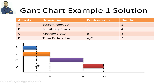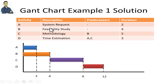Here is the look or appearance of this chart. We have activities, predecessors, descriptions, and durations. Predecessors are the activities that a given activity is dependent on.